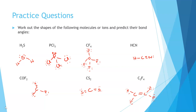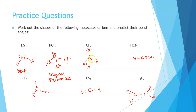SH2 has two non-bonding pairs on the sulfur, pulling it into a bent or V-shaped structure. For PCl3, sulfur has five valence electrons giving a lone pair on the central atom, so the three chlorines arrange in a trigonal pyramidal shape. CF4 has four single bonds around carbon with no non-bonding pairs, making it tetrahedral. For hydrogen cyanide, a triple bond to nitrogen and a single bond to hydrogen gives two bonding arrangements distributed as far apart as possible — a linear structure.